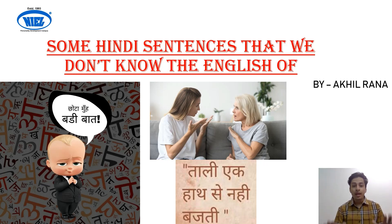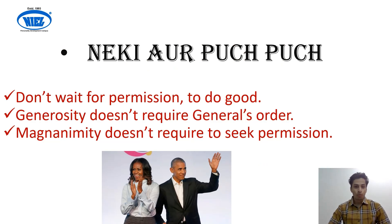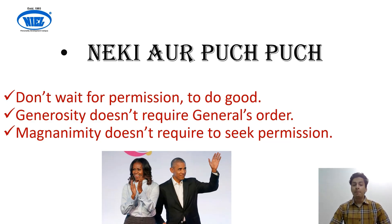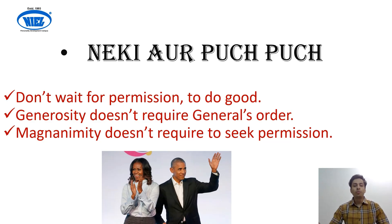So without wasting further time, let's begin. The very first sentence: 'Neki or pooch pooch.' The first way to say it in English is: 'Don't wait for permission to do good.' The second way is: 'Generosity doesn't require a general's order' — yaani ki to be generous you don't need anyone's order. Another way is: 'Magnanimity doesn't require seeking permission.' Magnanimous and generous have the same meaning.